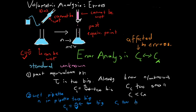That's what error analysis is all about. We look at the error, figure out its immediate effect on the relevant solution, and then follow that effect through the calculations for the rest of the titration to see how it ultimately affects our calculated value for the concentration. It's all about comparing a calculated concentration — affected by errors — with the actual concentration of the solution.